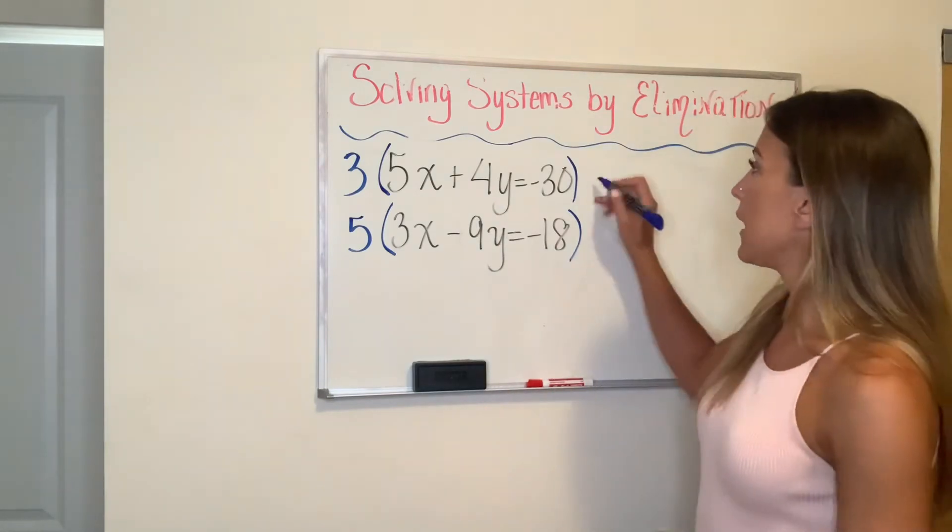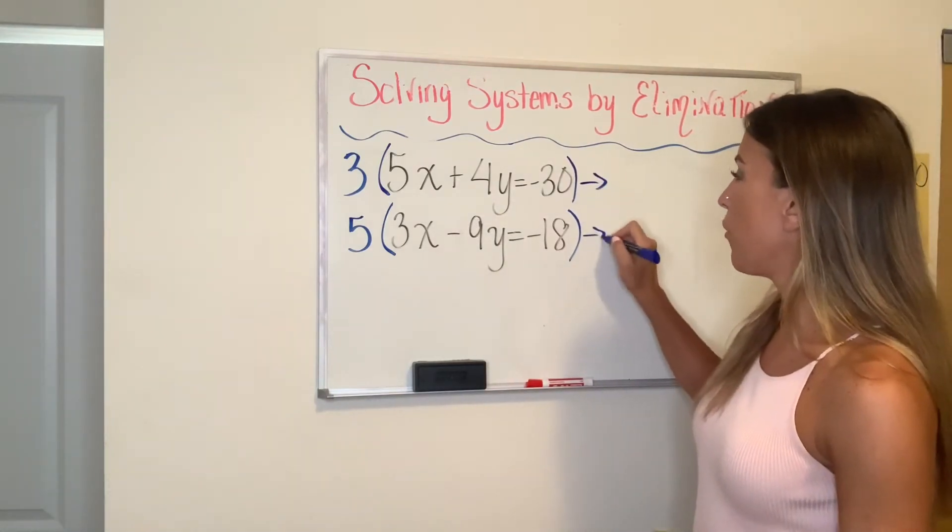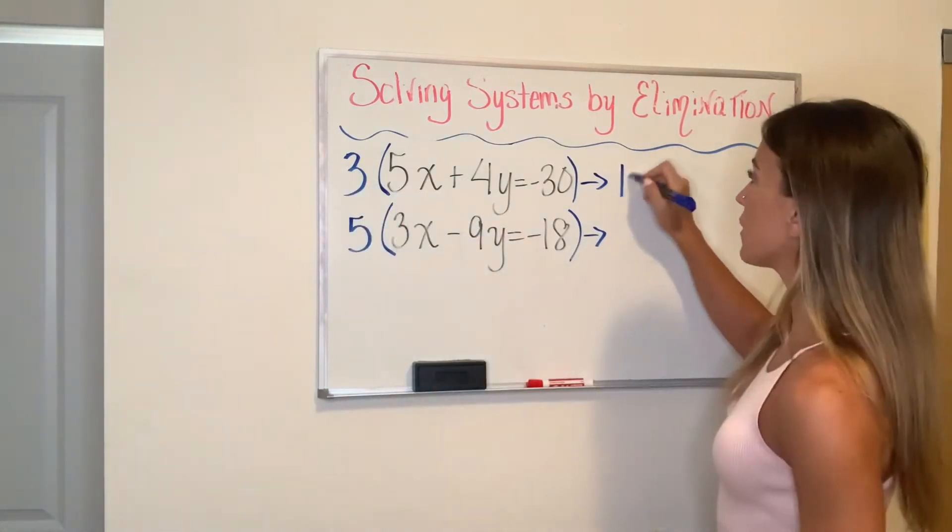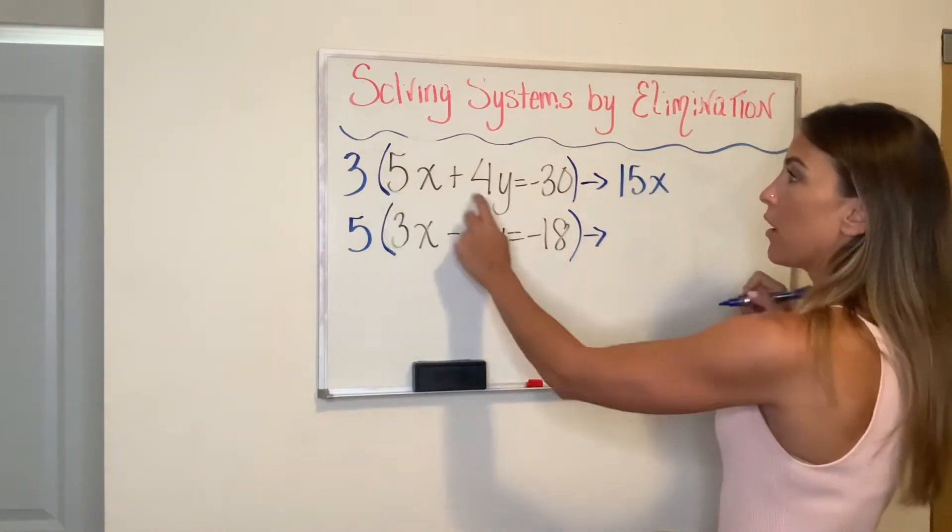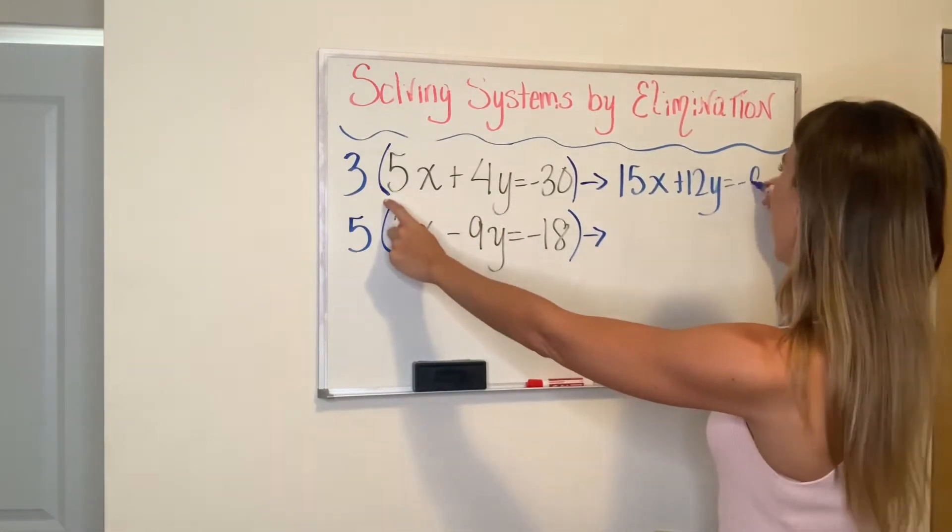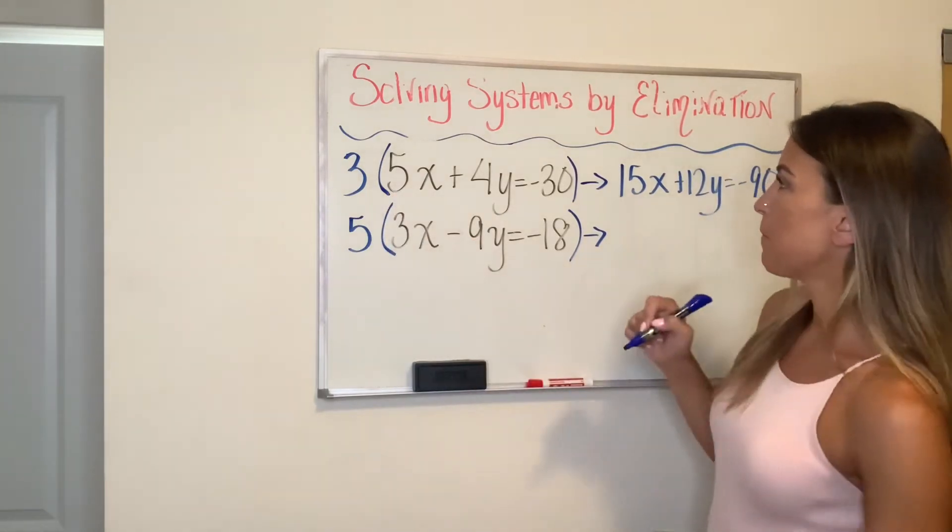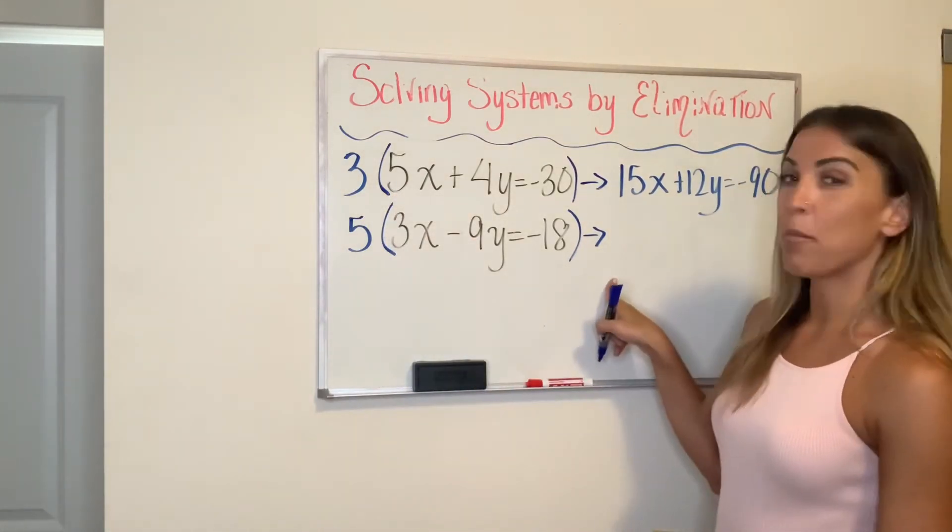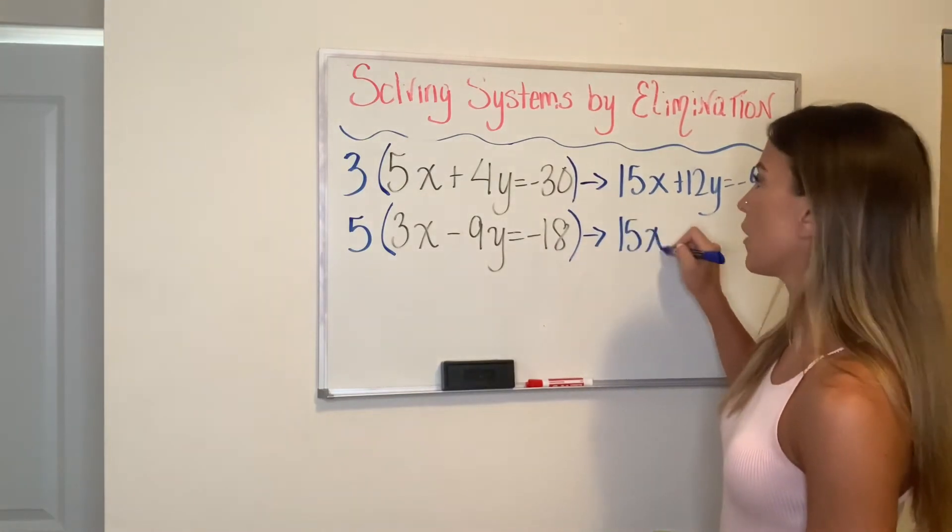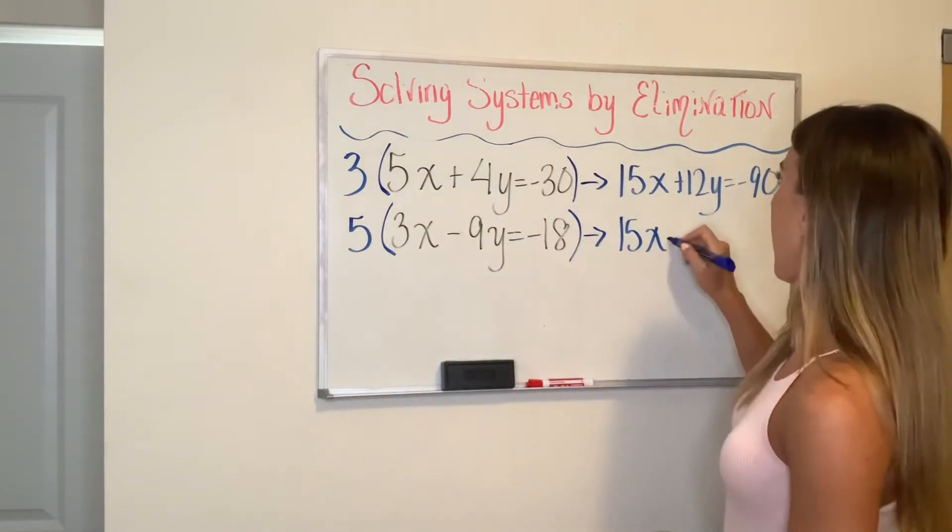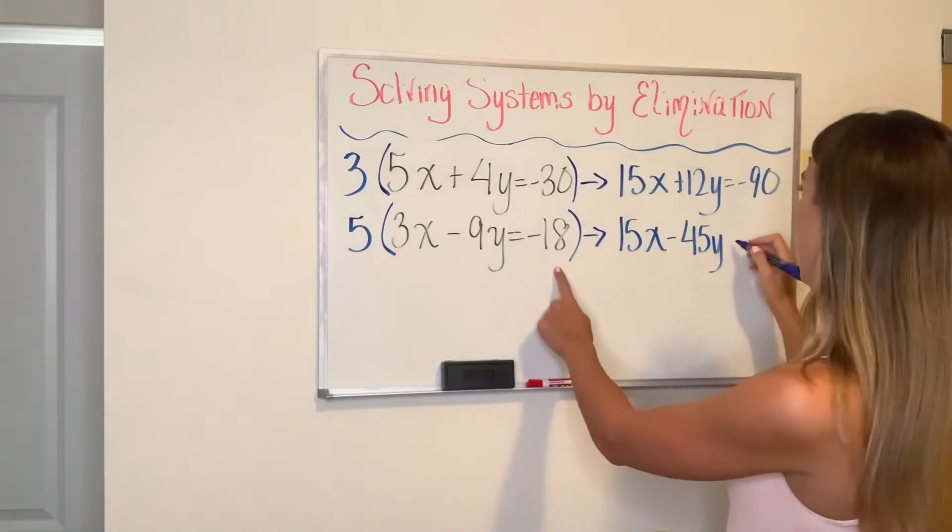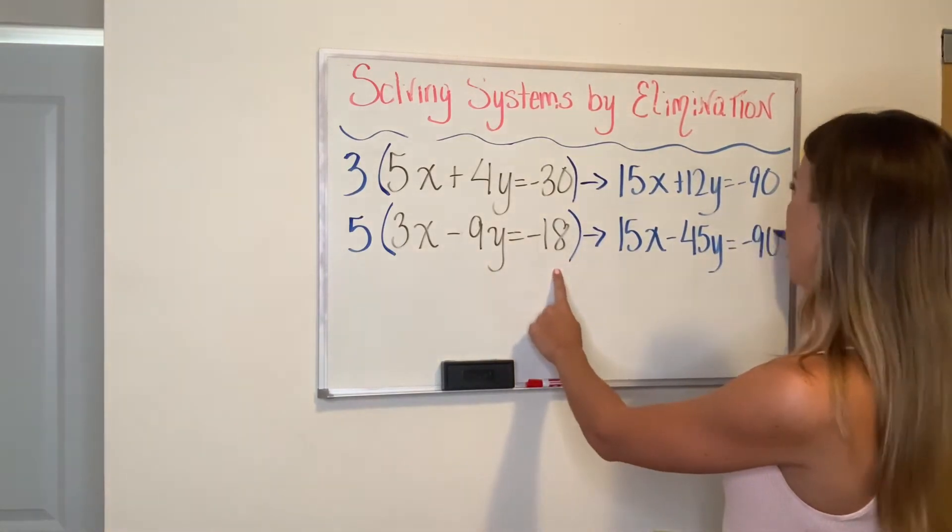So now let's do this. Let's get our new equations in blue over here. If I multiply the entire top equation by three, I'm going to have 15x, 12y, and negative 90. The bottom equation I'm going to multiply by five. So I'm going to have 15x minus 45y equals negative 90.